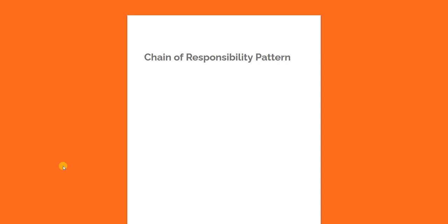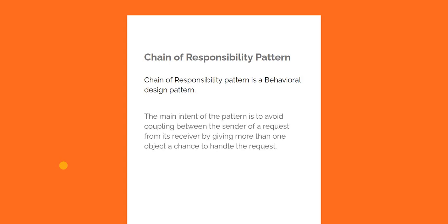Hello everyone and welcome to dotnet core central. In today's video I'm going to talk about another design pattern — the Chain of Responsibility design pattern. It is one of the design patterns from the Gang of Four. Chain of Responsibility is a behavioral design pattern and the main intent of this pattern is to avoid coupling between the sender of a request and its receiver.